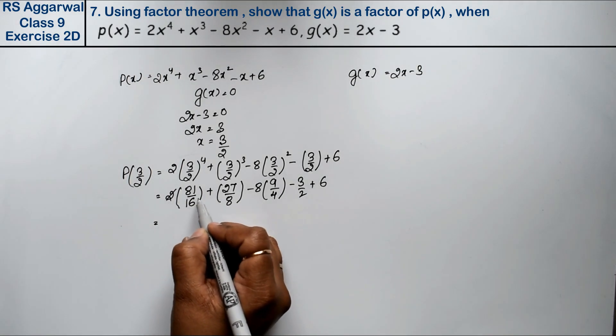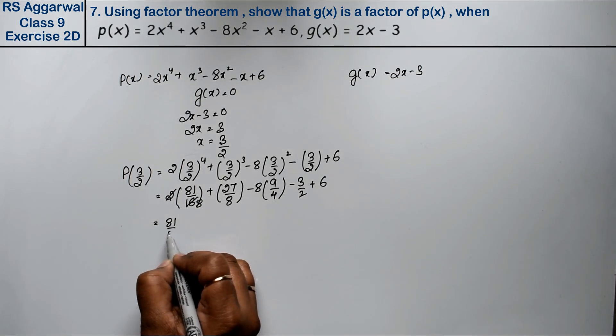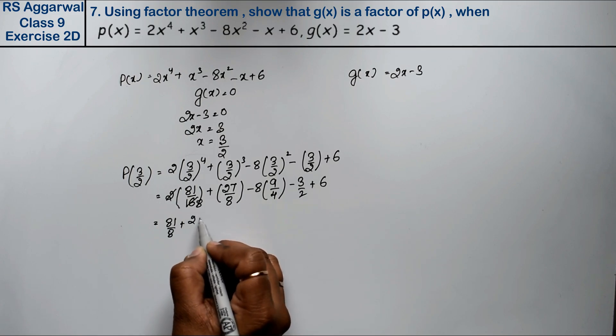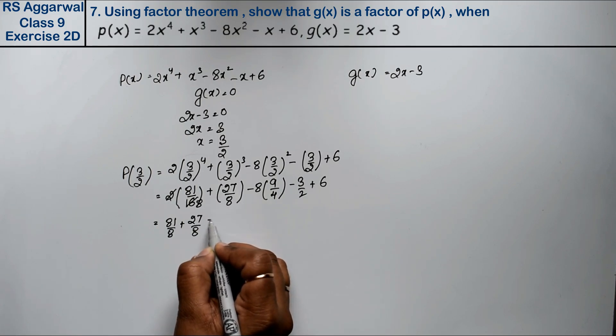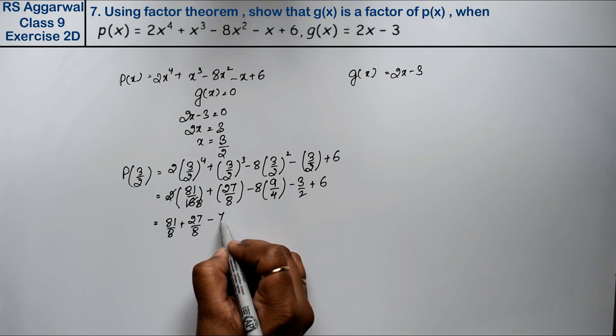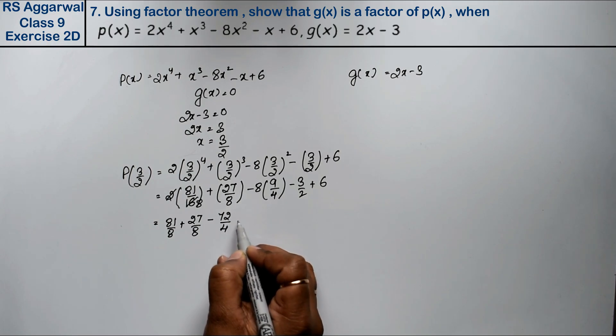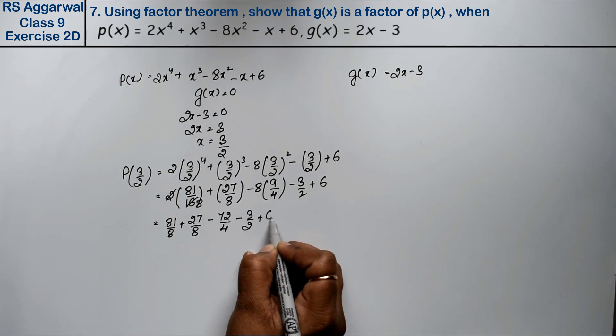Now see, 2 times 8 is 16. 81 upon 8 plus 27 upon 8 minus 72 upon 4 minus 3 upon 2 plus 6.